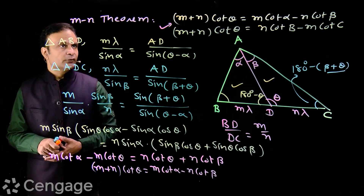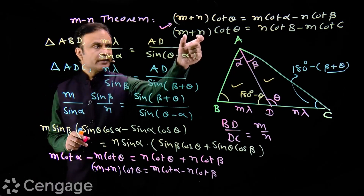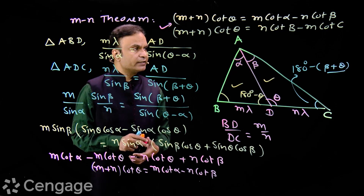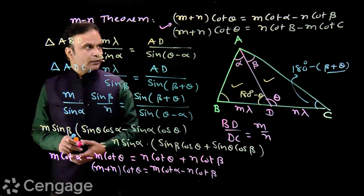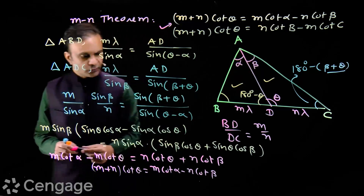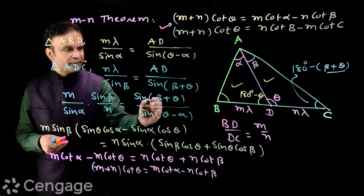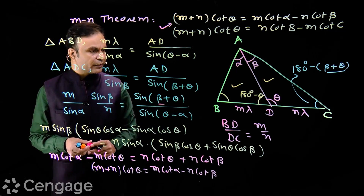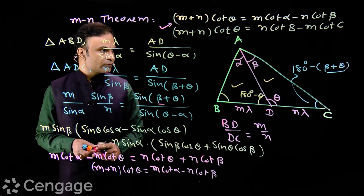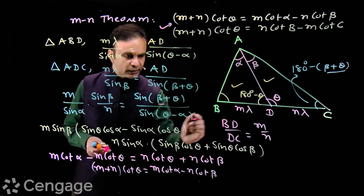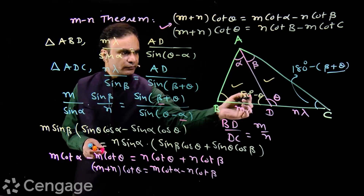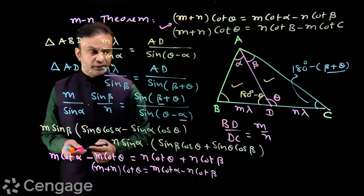The second formula for the MN theorem is: (m + n)·cot theta equals n·cot B minus m·cot C. To derive this, we replace angle beta in terms of theta and angle C, and we write angle alpha in terms of angle theta and angle B.